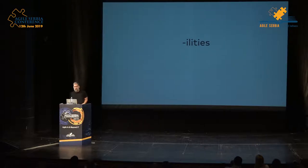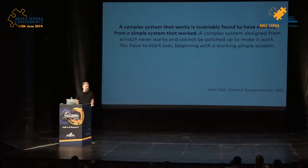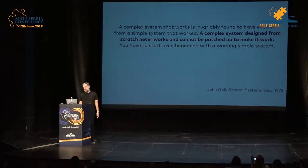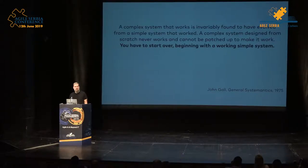I've got a quote I like a lot, and I'm going to read it in three parts. First: 'A complex system that works is invariably found to have evolved from a simple system that worked.' That seems obvious, but there's a lot of depth to it. Second: 'A complex system designed from scratch never works.' And more importantly: 'It cannot be patched to make it work. You have to start over, beginning with a working simple system.'